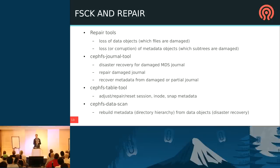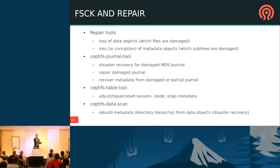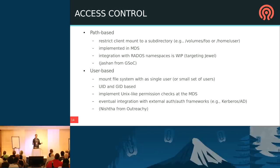We want repair tools that handle the loss of data objects in case RADOS fails, and more importantly, tools to recover loss of metadata objects if the file system metadata gets corrupted. There's a CephFS journal tool for disaster recovery of the MDS journal structure, a table tool that adjusts other internal metadata structures, and the CephFS data scan tool — the most important — which can rebuild the file system hierarchy from metadata attached to file objects even after complete metadata loss. All of this will be ready for Jewel.